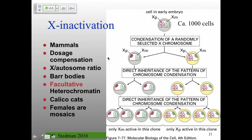For a long time, Barr bodies — inactivated X chromosomes — were used to determine the sex of athletes. These inactivated chromosomes are highly compacted, and you can see them in interphase nuclei. If you're given cells, it's a really easy way to tell: if there are Barr bodies, it's female; if not, it's male.